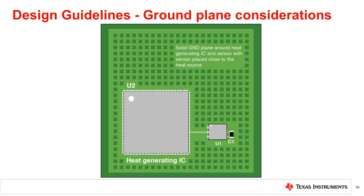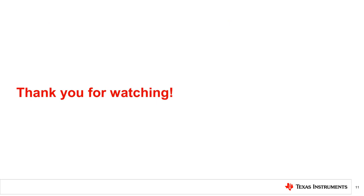If it is not practical or cost effective to place the temperature sensor on the opposite side of the heat source, place it on the same side as close as possible to it, as shown in the figure. The most effective way to create a thermal equilibrium between the heat source and the temperature monitor is through the ground plane, using a solid ground plane that extends from the heat source to the temperature sensor. Thank you for watching this TI Precision Lab video on board temperature monitoring, where we discuss sensor thermal paths and optimal PCB design techniques for board temperature monitoring.